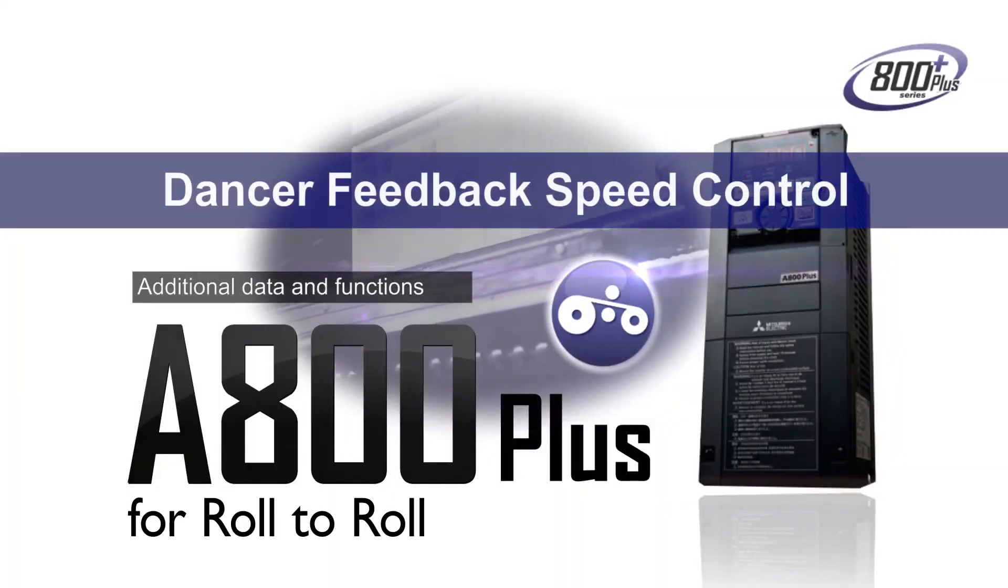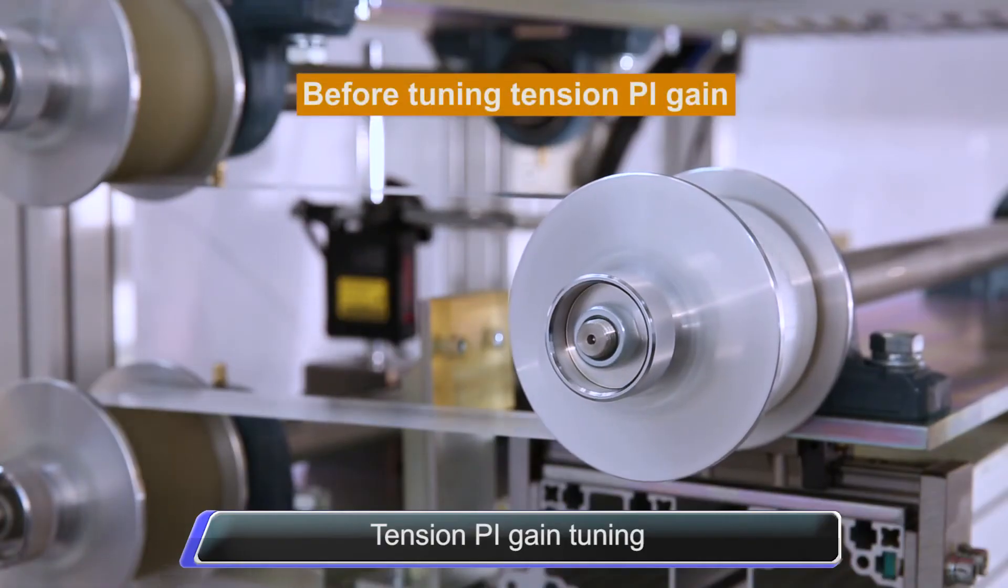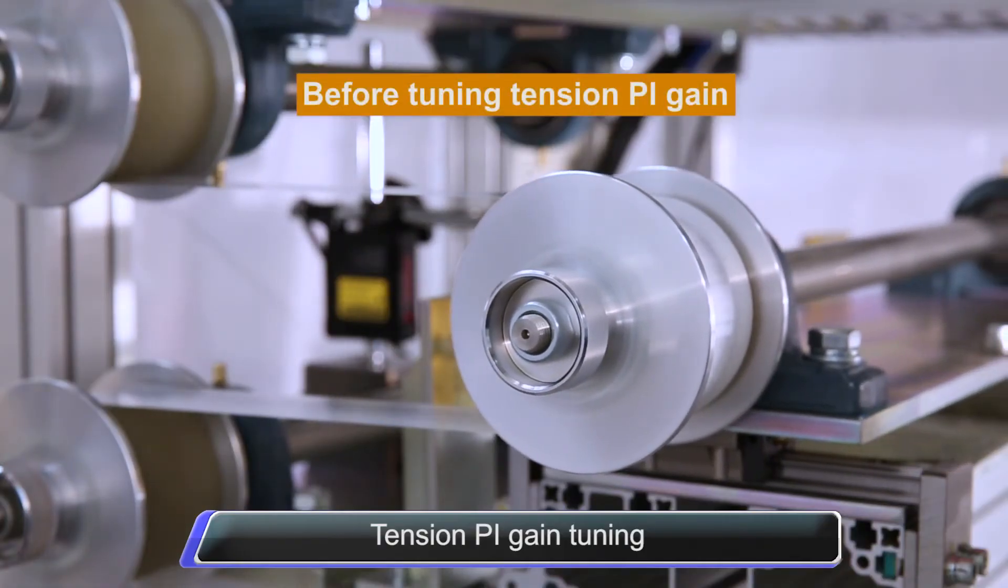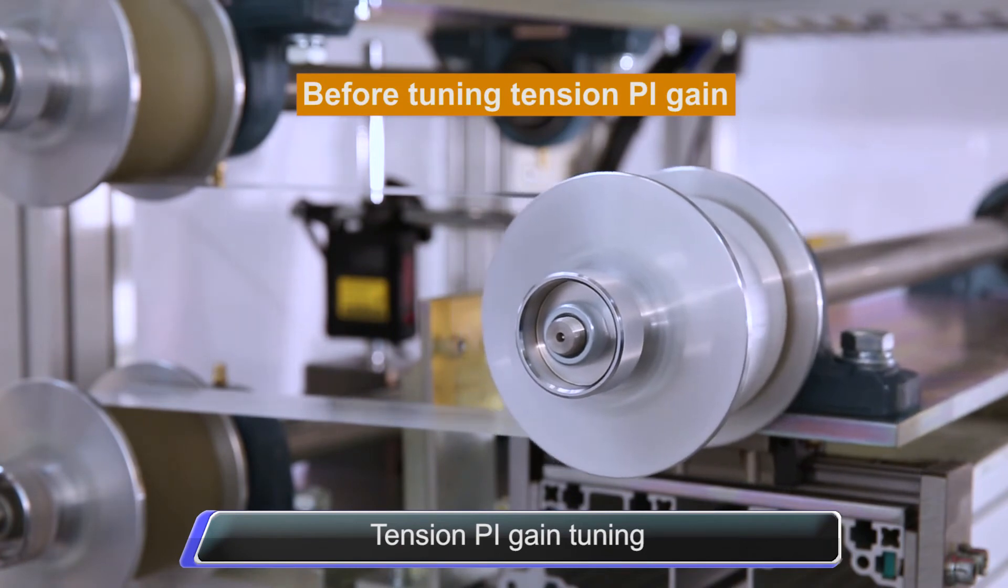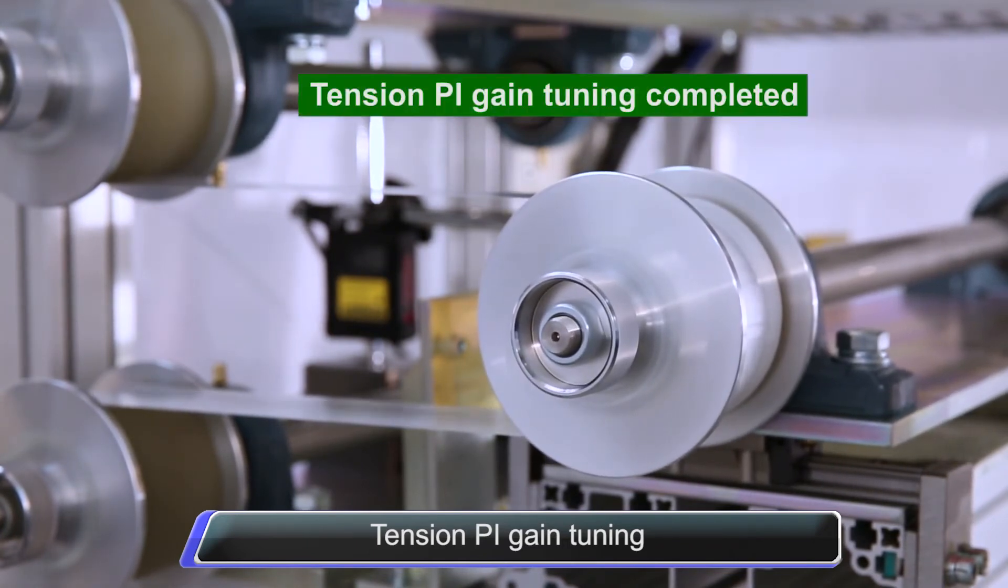The FRA800 Roll-to-Roll Inverter is outfitted with many outstanding functions. It has a tension PI gain tuning function which can automatically adjust the tension PI gain of PID control. This function drastically reduces gain adjustment time and simplifies system startup.